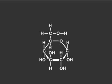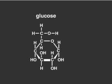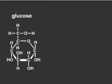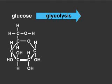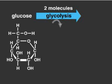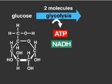Cells break down food molecules, such as glucose, through multi-step pathways. In the process of glycolysis, the breakdown of one glucose molecule into two 3-carbon molecules produces a net gain of energy that is captured by the molecules ATP and NADH.